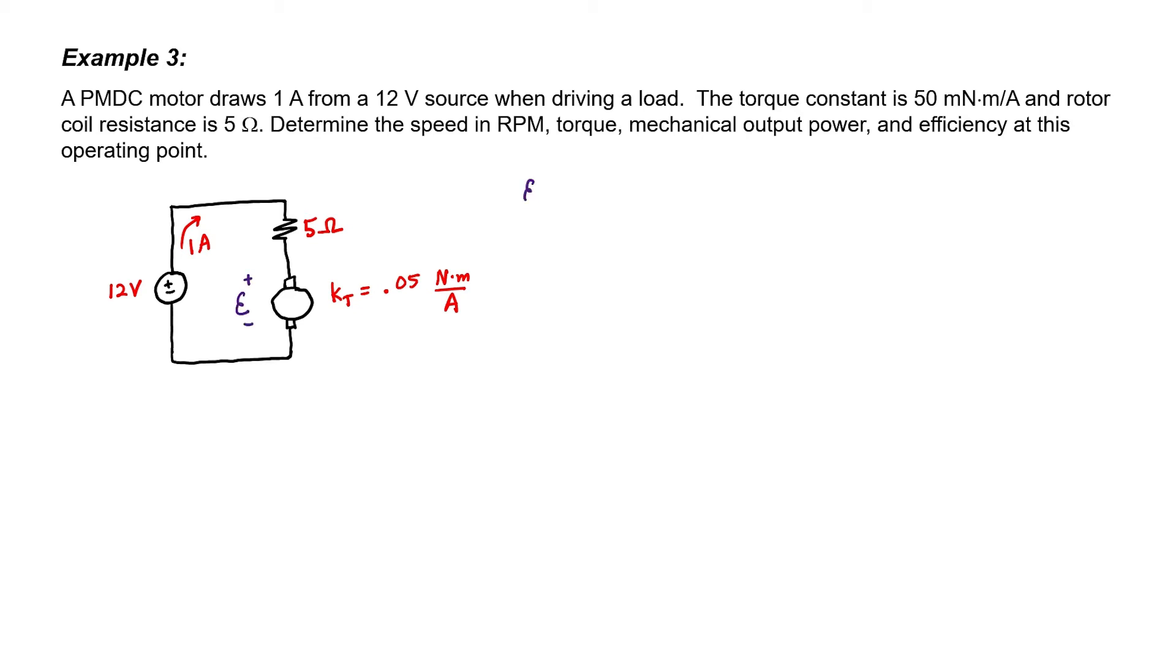I can use the Kirchhoff voltage rule to find the back EMF. We have 12 volts at the source and a voltage drop across the coil resistance. We end up with effectively 7 volts across the motor itself. The torque constant is defined as the ratio of the back EMF to the speed, so I now have enough information to calculate the speed. It's important to keep everything in SI units. The speed comes out to be 140 radians per second, which works out to 1337 rpm.